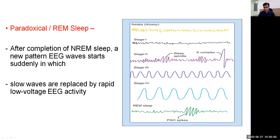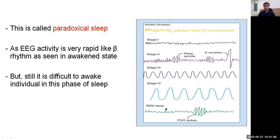As we can see here, there are four stages of NREM sleep, and then the person enters REM sleep, which is characterized by slow waves being replaced by rapid low-voltage EEG activity. This is called paradoxical sleep. The EEG activity is very rapid, like that seen in the awakened state, but still it is very difficult to awaken the person during this phase of sleep.